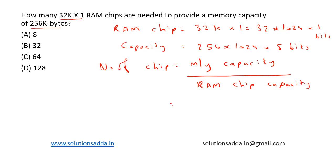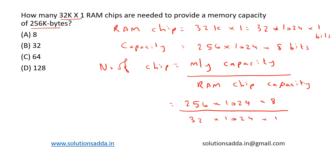This is equal to 256 into 1024 into 8, divided by 32 into 1024 into 1. The 1024s cancel out; 32 and 8 simplify to give 4, and 4 into 256 gives 64. So we need 64 RAM chips, and the correct option is option C: 64.